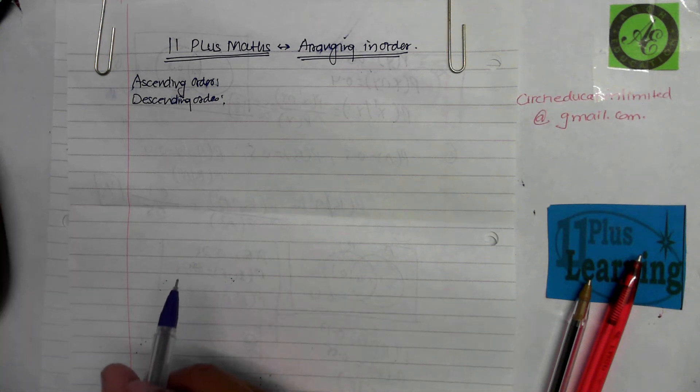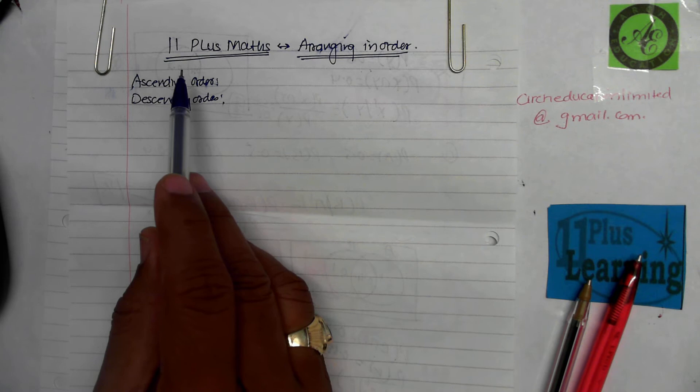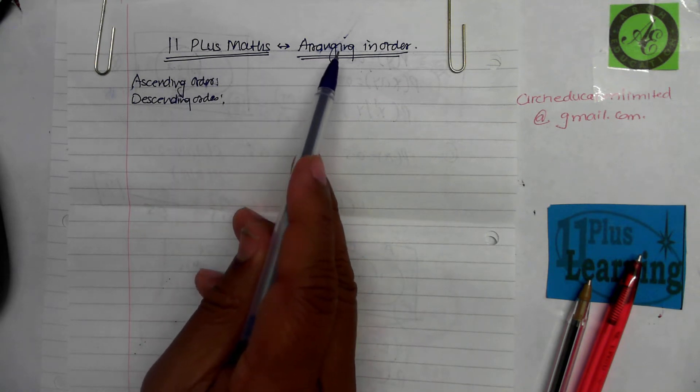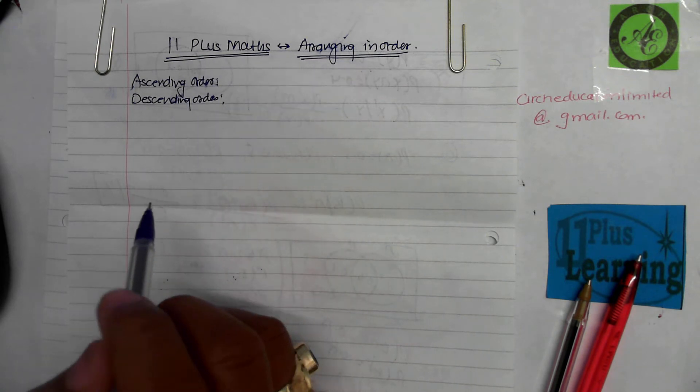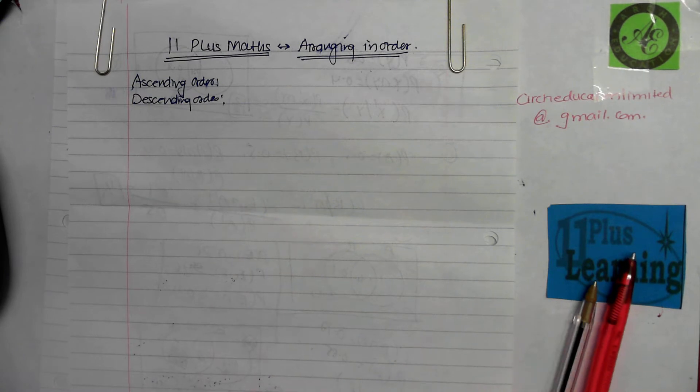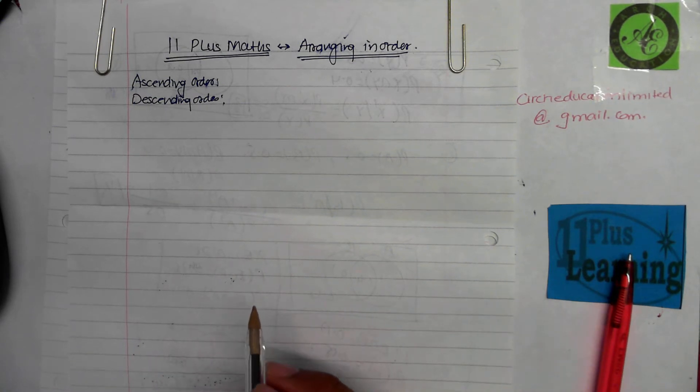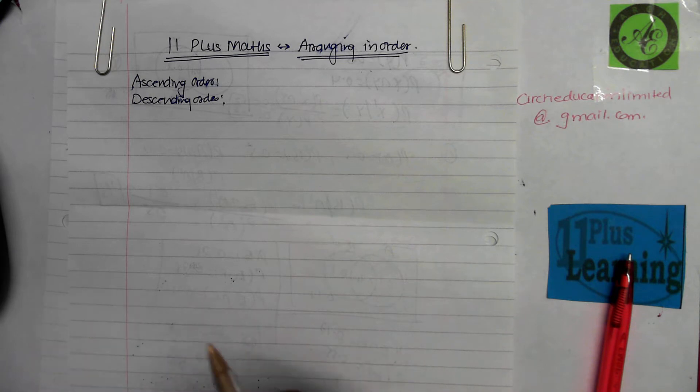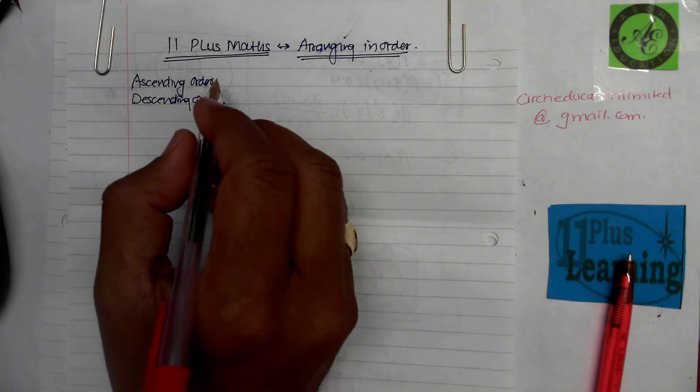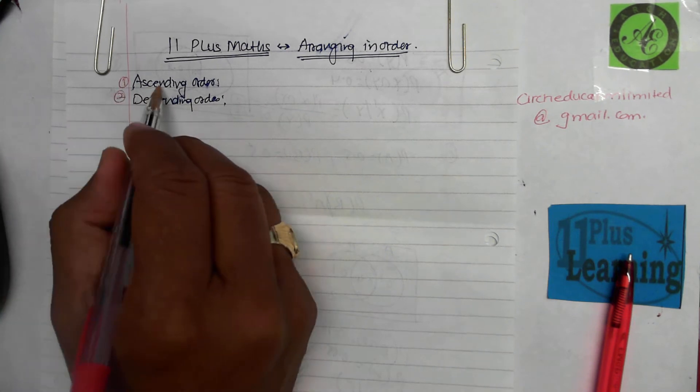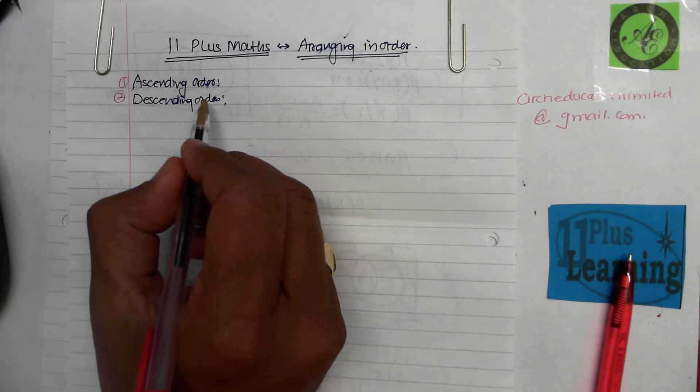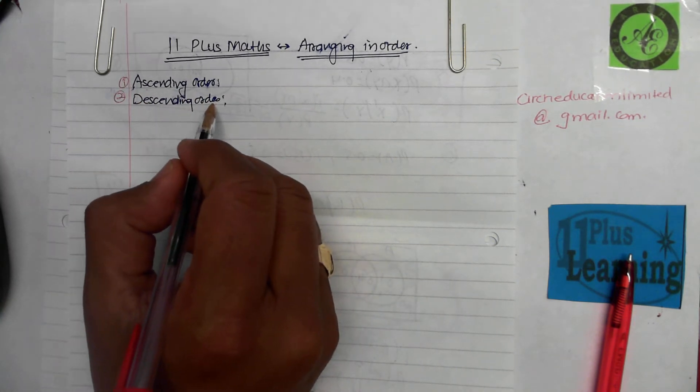Hello and welcome to our channel again. This is another video on 11 plus math, about arranging numbers in order. A very popular question in 11 plus where they ask you to arrange a few numbers in order. The numbers can be mixed, all different types. First, before we move on, we're going to be working on these two keywords: ascending order and descending order.